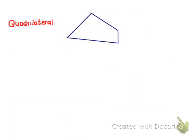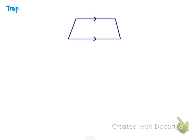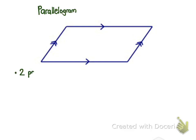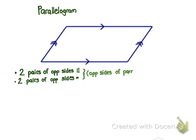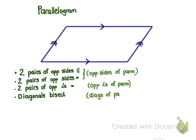Let's quickly look at the properties with geometry reasons. A quadrilateral has one property: angles add to 360 degrees, and the geometry reason is 'sum of angles in a quad.' A trapezium is a quadrilateral where the angles add to 360, with one pair of opposite sides parallel. A parallelogram has two pairs of opposite sides parallel, two pairs of opposite sides equal — geometry reason 'opposite sides of parallelogram' — two pairs of opposite angles equal — 'opposite angles of parallelogram' — and diagonals bisect — 'diagonals of parallelogram.'